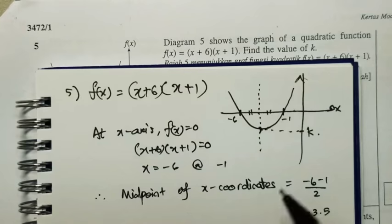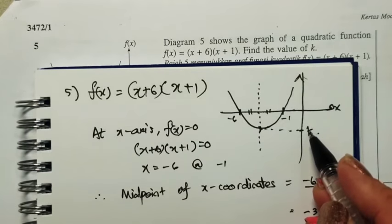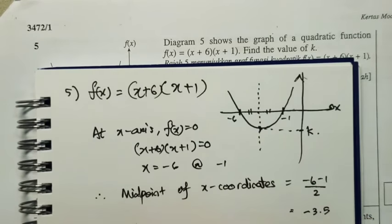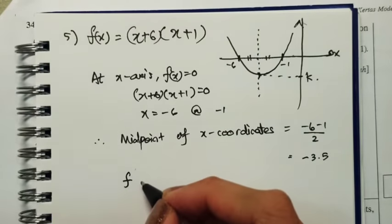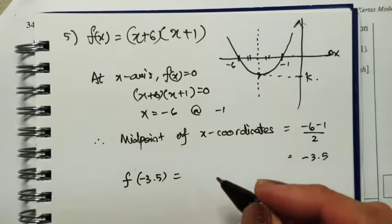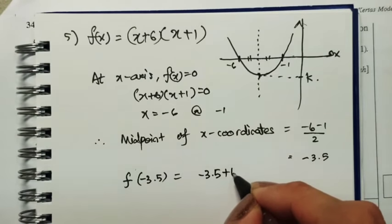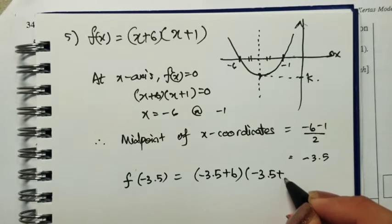So with that, if the x-coordinate equals negative 3.5, we want to find k, the y value. Therefore, substitute the value of x, negative 3.5, into the function. Then we will have (-3.5 + 6)(-3.5 + 1).